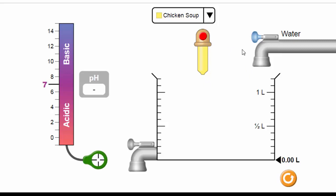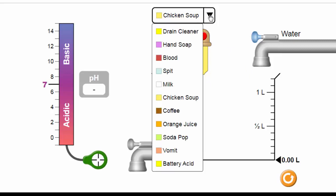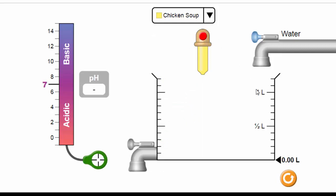Here in this menu, you can see several chemicals or items that we can measure the pH value for. So if we start with the chicken soup, for example, you can control the volume—how much volume you want to test for each item.